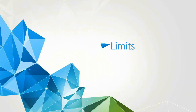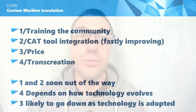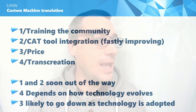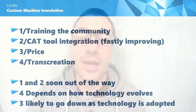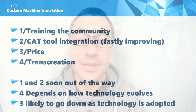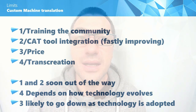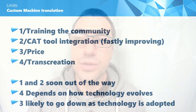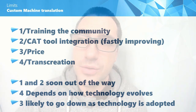Now let's talk about some limits that these engines have at the moment. The first is training the community — the community doesn't really know how to work with these yet. As time goes by, both translators and language service providers will know better how to handle these tools. The second is CAT tool integration. Many CAT tools are ready to work with custom machine translations, but they are not yet ready to send data from the translator back to update the engine. That's coming in the months ahead, so perhaps when you're watching this video, this feature is already released.